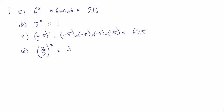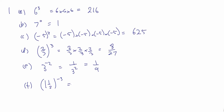2 thirds cubed is 2 thirds times 2 thirds times 2 thirds, which is 8 over 27. Part E: 3 to the minus 2 is a negative index, so that is 1 over 3 squared, and 3 squared is 9, so that's 1 over 9. And 1 and a half to the minus 3: write 1 and a half as the improper fraction 3 over 2 to the minus 3. Because it's to the minus, I take the reciprocal: 1 over 3 over 2 is 2 over 3, so that's the same as 2 thirds to the power of 3, which is 8 over 27.